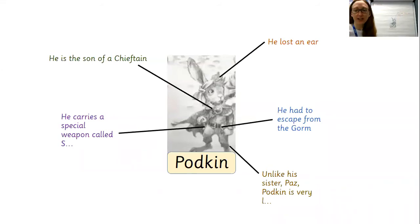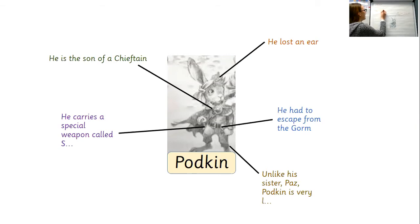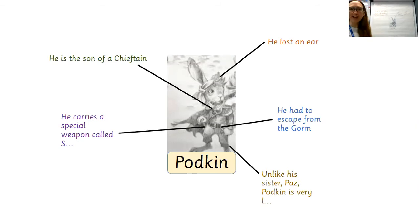Something else I know about Podkin is that he's no ordinary rabbit — he is the son of a chieftain, so he has a bit more responsibility and is expected to behave in certain ways. So another quick fact, drawing another line from a different part of him: he is the son of a chieftain. Thinking about some basic bits of information here.